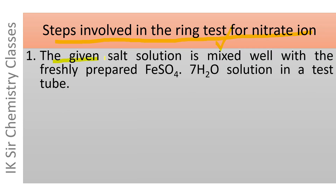The given salt solution is mixed with freshly prepared FeSO4·7H2O solution in a test tube. The salt solution in which the presence of nitrate ion is to be detected is taken in a test tube, and freshly prepared FeSO4·7H2O solution is added to it and the two solutions are mixed well.